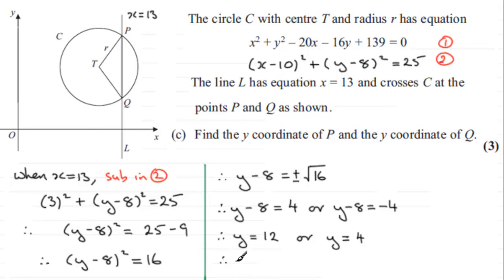So let's just summarize at the end by saying therefore, the y coordinate of P is 12, and for Q, it is going to be 4. So there's our two answers there.